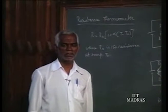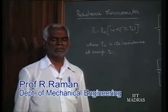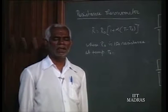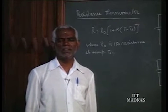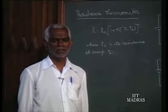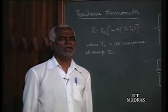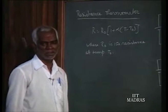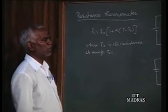We have seen under temperature measurement, thermometers using the properties of physical dimension changing. Secondly, we have seen the electrical property, that is the thermal EMF, the thermocouple junctions and their properties and the different pairs of thermocouples. Now, we are going to see radiation and resistance thermometers. First, you will see a resistance thermometer and then you will see radiation thermometers or radiometers.